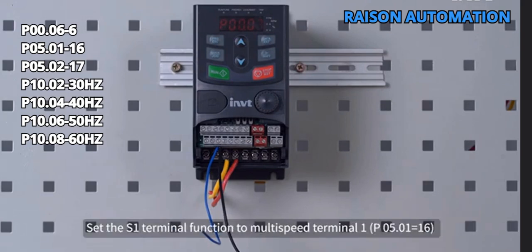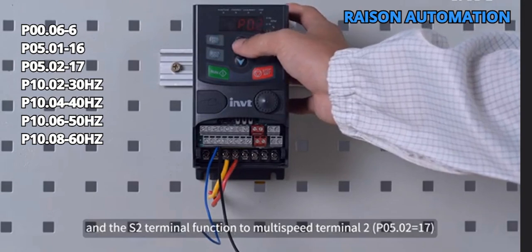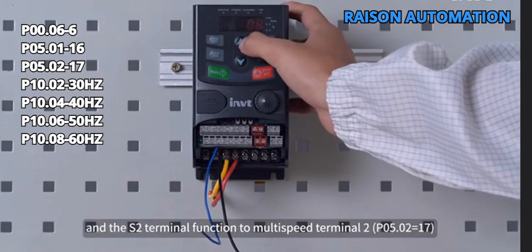Set the S1 terminal function to multi-speed terminal 1 P05.01 equals 16 and the S2 terminal function to multi-speed terminal 2 P05.02 equals 17.